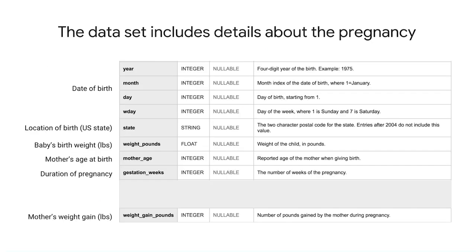The data set includes a variety of details about the baby and about the pregnancy. We'll ignore the birthday, of course. But columns like the US state, the mother's age, gestation weeks, et cetera — those might be useful features. The baby's birth weight in pounds is the label; it is what we are training our model to predict.